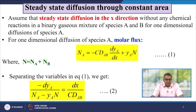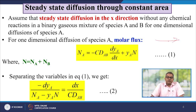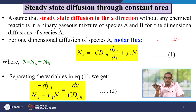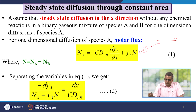Now let us talk about the steady state diffusion through constant area. Assume steady state diffusion in the x-direction without any chemical reaction in a binary gaseous mixture of species A and B. For one-dimensional diffusion of species A, the molar flux can be given by this particular equation, which we can say is equation number 1.